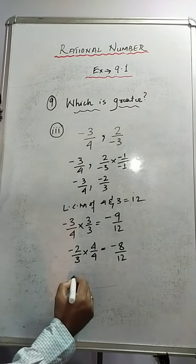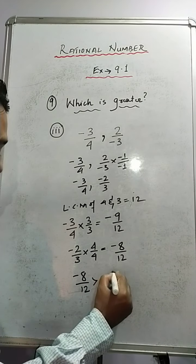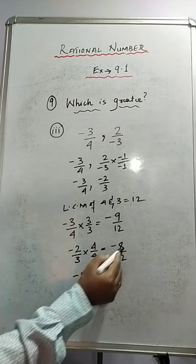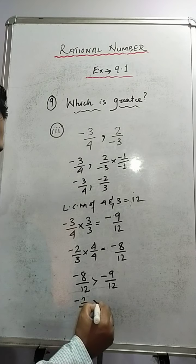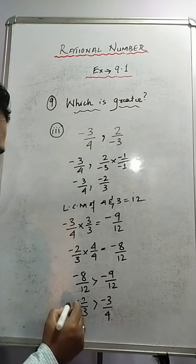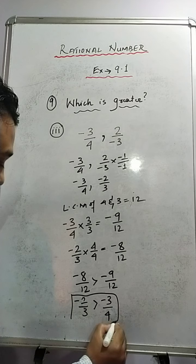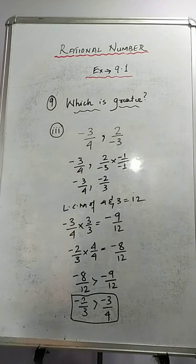Obviously minus 8 is greater than minus 9, so minus 8 by 12 is greater than minus 9 by 12. Minus 8 by 12 comes from minus 2 by 3, which is greater than minus 3 by 4. This is the solution of sum number 3. Sums number 4 and 5 are similar — you can do those yourself. Now let's move on to question number 10.